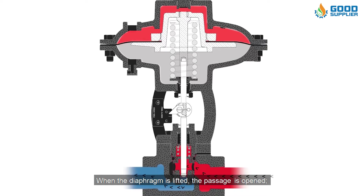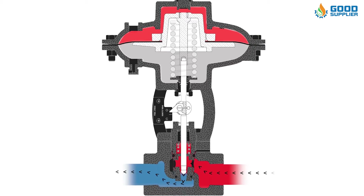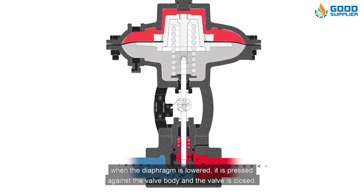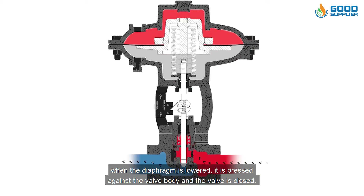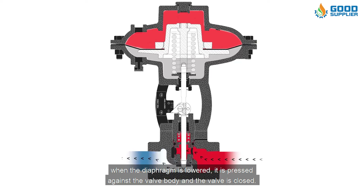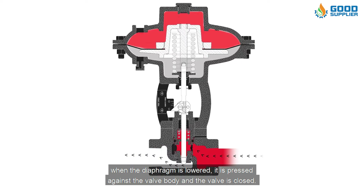When the diaphragm is lifted, the passage is opened. When the diaphragm is lowered, it is pressed against the valve body and the valve is closed.